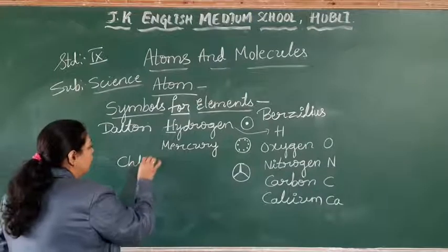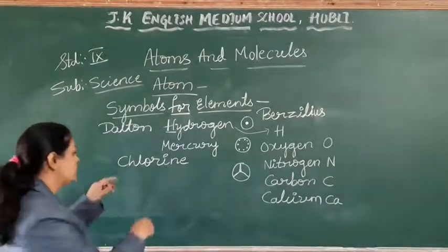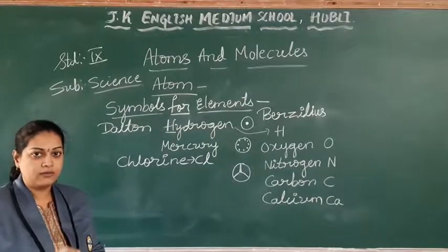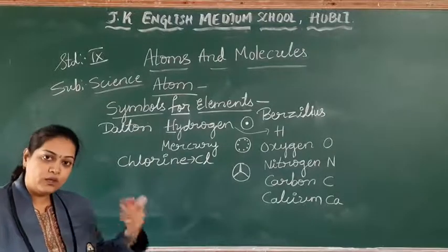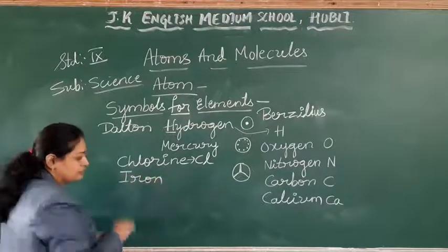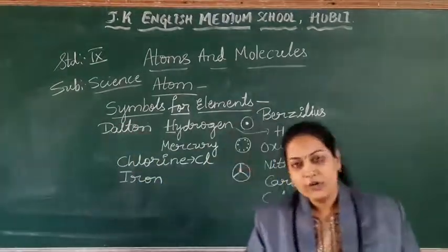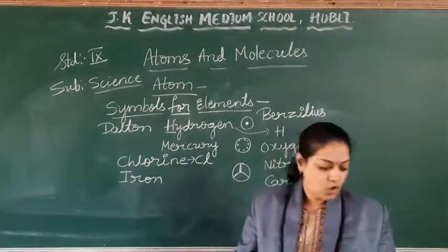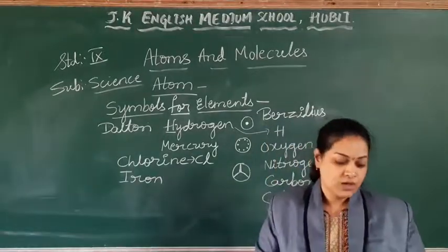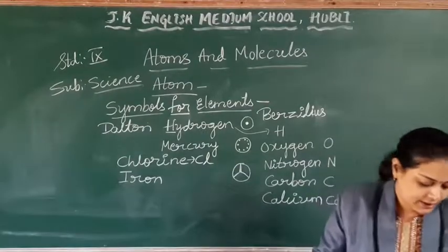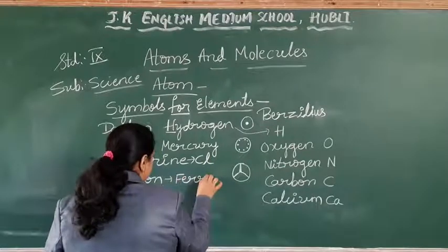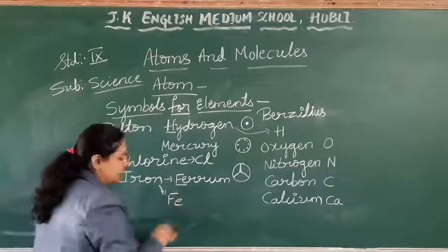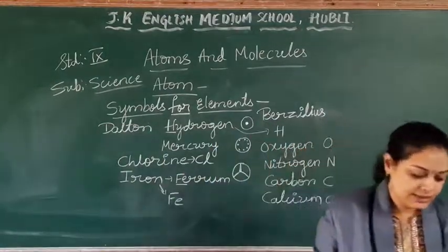Let me take one more example — chlorine. What is the symbol? C, L. C is the first letter, L is the third letter. So either the second or the third letter is taken. Coming to a few more examples like iron — iron already had I assigned. To avoid confusion, he took either the Latin, Greek, or German meaning of such an element. Iron's Latin word is ferrum, so he took the first two letters: Fe — capital F, small e.